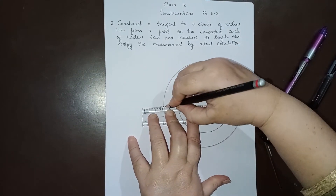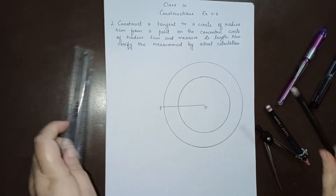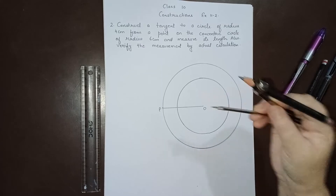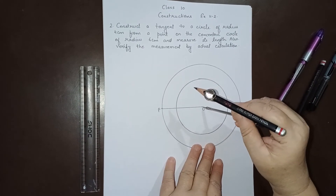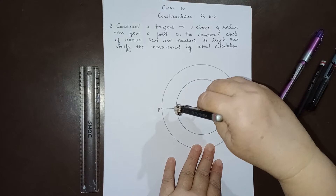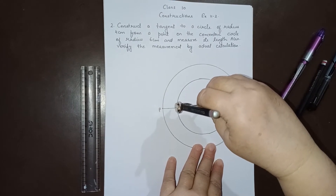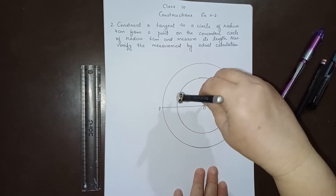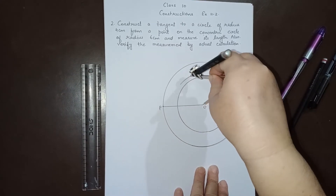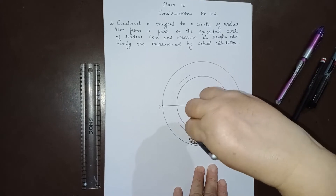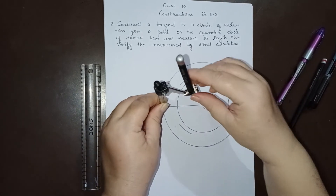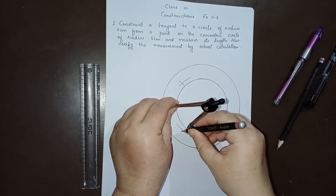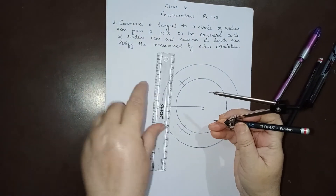First, join O and P, and make the perpendicular bisector of OP. To do this, take a compass opening more than half of OP and make one arc from O and one arc from P on both sides. When you join these two intersection points, you get the perpendicular bisector of OP.